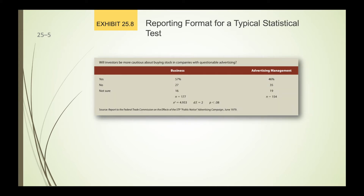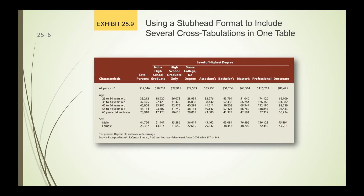Here you have a statistical test — you've seen plenty of those in the textbook. It gives you from the business to the advertising management, then the formula and the outcome. Notice too that all of the slides so far have at the bottom the source, your resources or references. This slide shows several cross-tabulations in one table — you see age, sex, which looks at the characteristic, and level of highest degree. You can go across from total persons to not a high school graduate all the way to a doctorate.